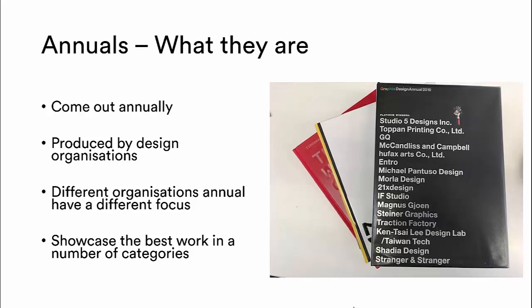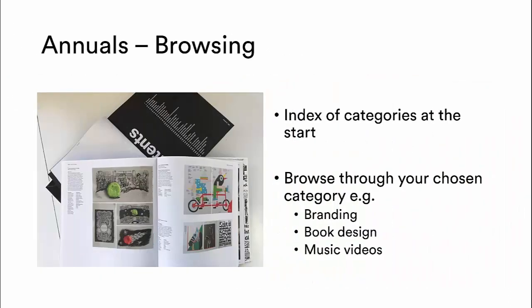So the first resource are what we call annuals. These are books produced by design organisations; they come out annually and round up the best designs in a number of different categories through a given year. Each annual has an index at the start where they break down the awards and examples of work by different categories — so this could be branding, book design, music videos, editorial design and so forth. So you don't have to browse through all different sorts of design. It's quite useful if you're interested in, for example, book design, as you can see examples of what this part of the industry thought was best in that given year.